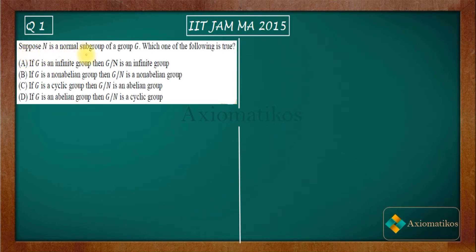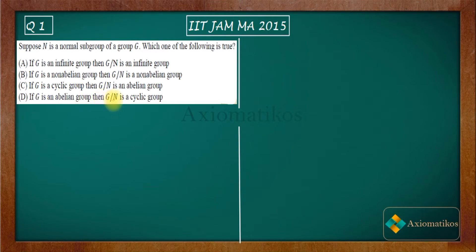Suppose N is a normal subgroup of a group G. Which one of the following is true? Option A says if G is an infinite group, then G by N is again an infinite group. Option B says if G is a non-abelian group, then G by N is a non-abelian group. Option C says if G is a cyclic group, then G by N is an abelian group. Option D says if G is an abelian group, then G by N is a cyclic group.